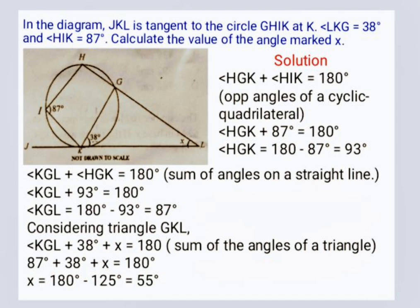Angle HGK plus angle HIK is equal to 180 degrees, opposite angles of a cyclic quadrilateral. So angle HGK plus 87 degrees is equal to 180 degrees.